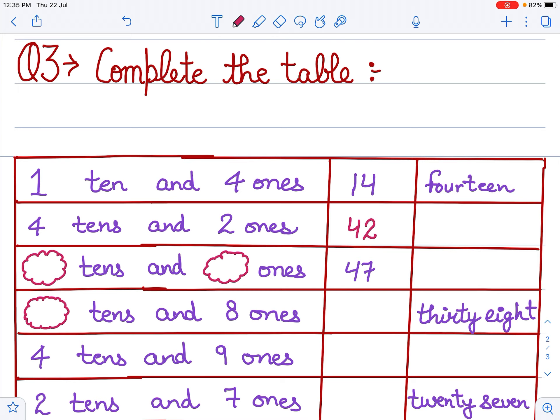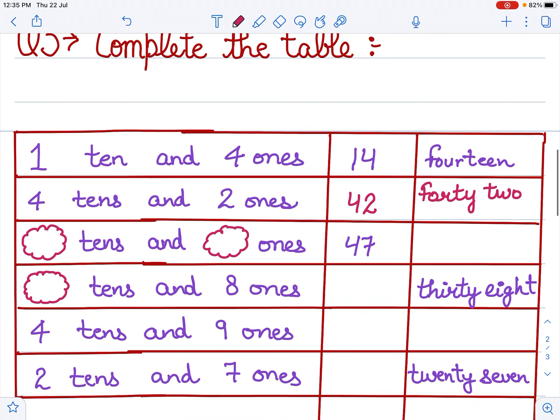Four tens and two ones, 42. Now we will complete this in words. 42: f-o-r-t-y t-w-o. Now look.